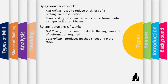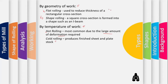Rolling operations can be classified based on two things: the geometry of the work and the temperature of the work. Based on temperature, we have hot rolling — whose main purpose is to produce large amounts of deformation or significant plastic shape change — and cold rolling, whose purpose is to produce high-strength sheets or increase the strength of the workpiece. Based on geometry, rolling can be either flat rolling or shape rolling. Flat rolling is used to reduce the thickness of a rectangular cross-section.